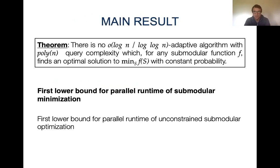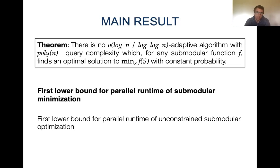I will now present the main results. Our main result is that we initiate the study of the adaptivity of submodular minimization by giving the first non-trivial lower bound for parallel submodular minimization. We show that there is no algorithm with adaptivity smaller than log n over log log n that can solve submodular minimization with constant probability. This lower bound holds for both deterministic and randomized algorithms, and it is also the first lower bound for unconstrained submodular optimization in general — for both unconstrained maximization and unconstrained minimization.